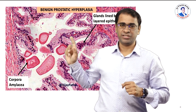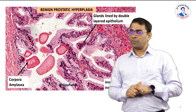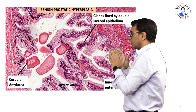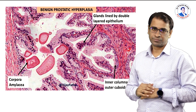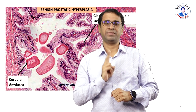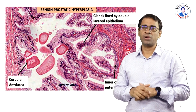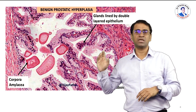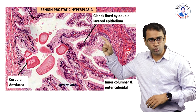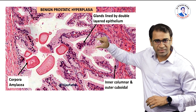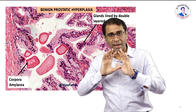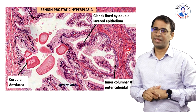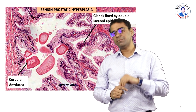Now, looking at this image, the important thing to understand is: is it BPH — that means hyperplasia — or is it malignancy? The moment you see a two-layered epithelium, please remember, this surely indicates a normal or benign condition — not a malignant condition. So this is actually a benign proliferation of the prostate, called BPH.